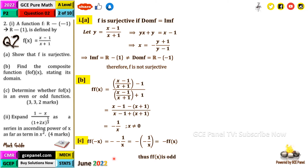If f∘f(−x) had been equal to f∘f(x), we would say it is even — like the cosine function, which is even, while the sine function is odd.